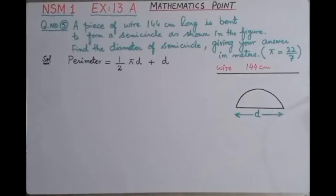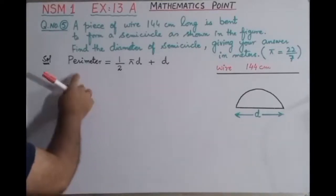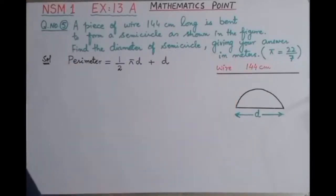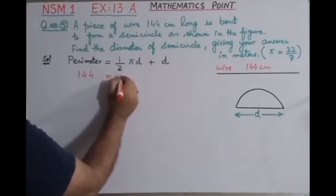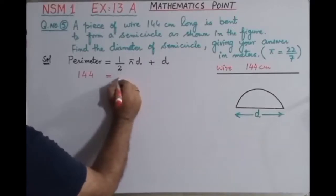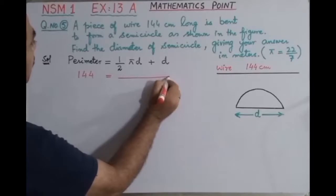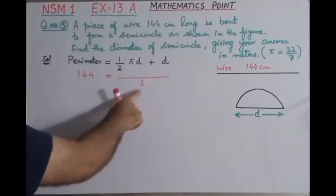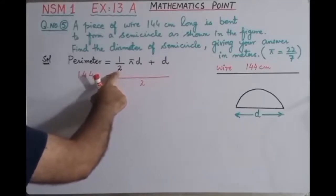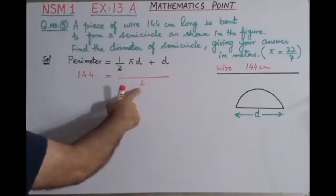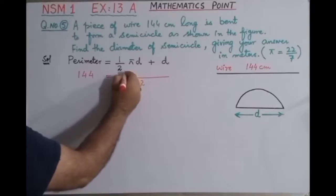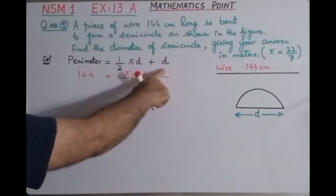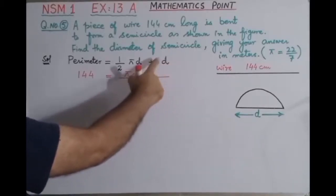Now we are going to put the values. What is the value of perimeter? Perimeter is equal to 144 centimeter. So write here 144 equals - we will take LCM. We have 2 in the denominator and here denominator is 1, so 2 is LCM. Now 2 ones are 2 and 1 into pi into d is pi d, plus 2 into d is 2d.